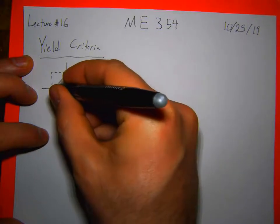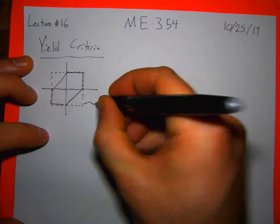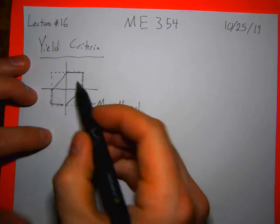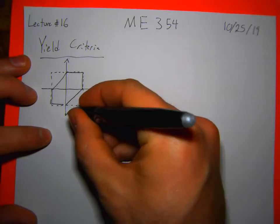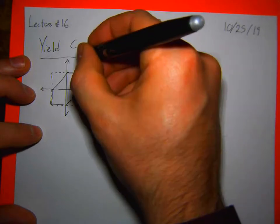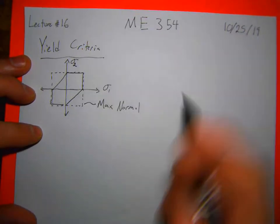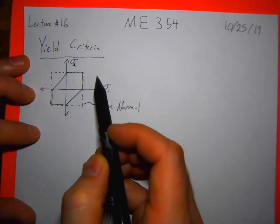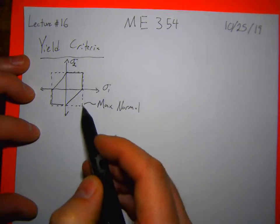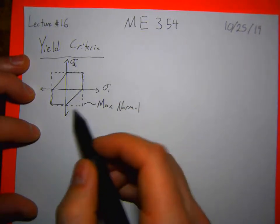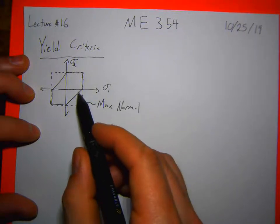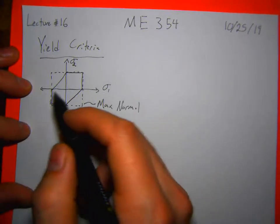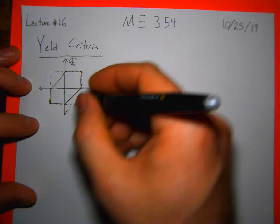For a max normal stress criteria, we draw this in principal stress space. If the stress lies within the yield surface, then the material hasn't failed. If it lies outside of it, then it has failed. For a max normal stress criteria, if either of the principal stresses surpasses the yield strength in tension or in compression, failure happens.